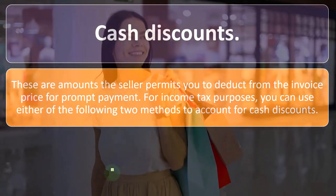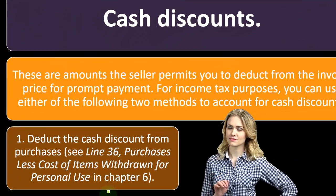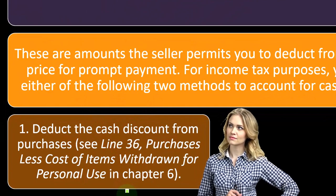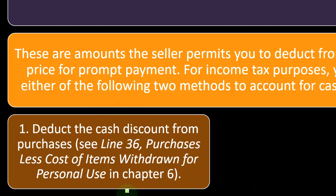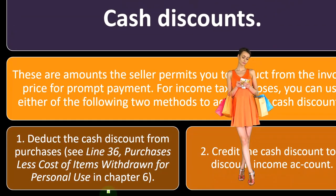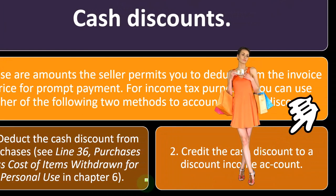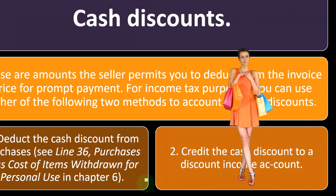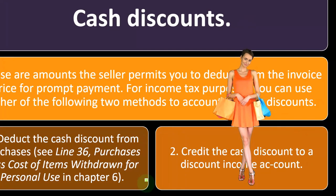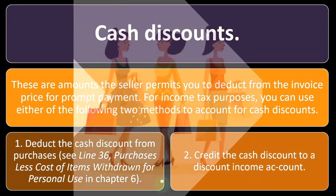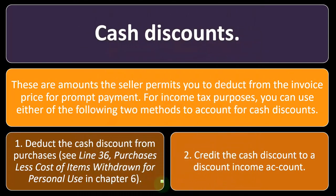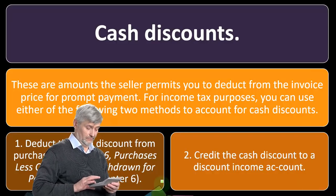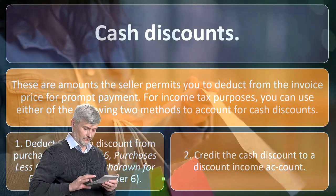For income tax purposes, you can use either of two methods to account for cash discounts. Number one: deduct the cash discount from purchases on line 36 in the cost of goods sold calculation. Number two: credit the cash discount to a discount income account. You have to determine whether you're locked in to taking the discount or recording it without the discount and then accounting for it when the discount comes into play.